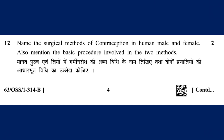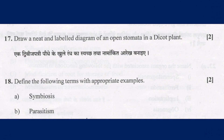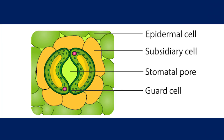Draw a neat and labeled diagram of open stomata in dicot plants. The diagram shows the open stomata, epidermal cells, and guard cells.